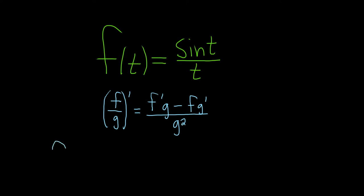Let's apply it to our problem here. So f prime of t is equal to, our top function here is sine t, so the derivative of sine is cosine. The derivative of the top is cosine t.